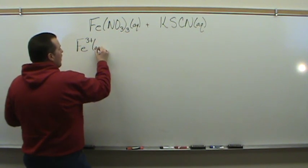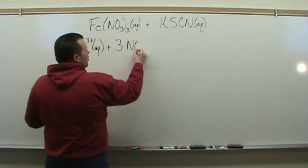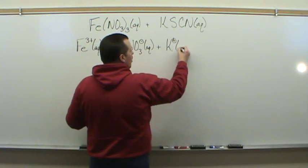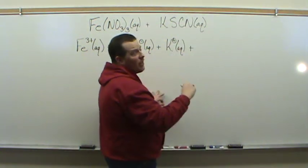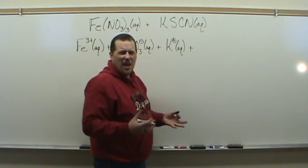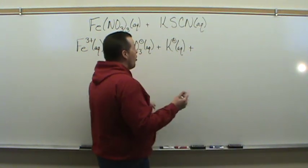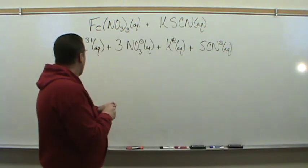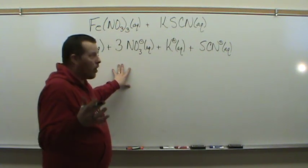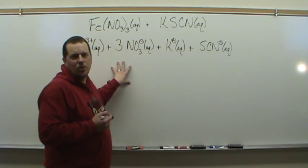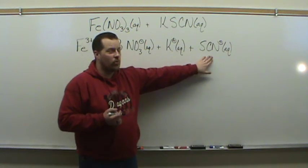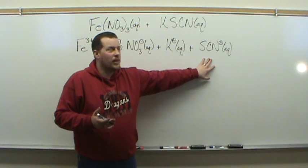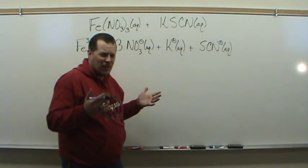We've got iron(3+) ions in solution, nitrate ions in solution, and thiocyanate ions. Thiocyanate is a polyatomic ion we may not have encountered before, but we'll use it a few times. When you mix these together a reaction occurs, but we need to figure out what's causing it. We want to look at these four components and decide which are required and which are spectator ions — because spectator ions aren't that important.